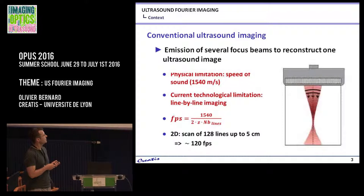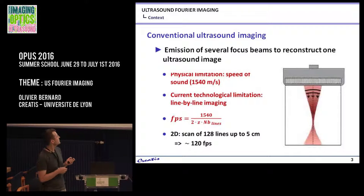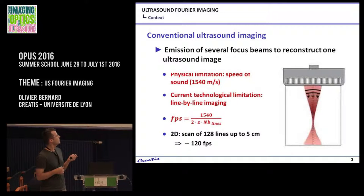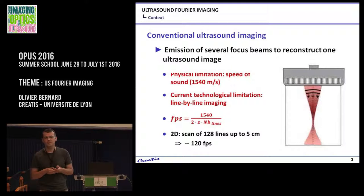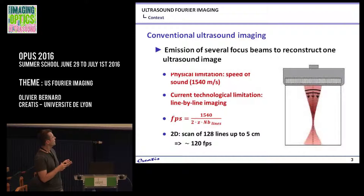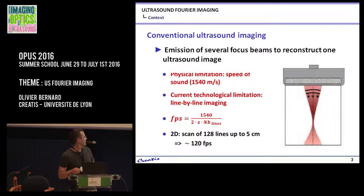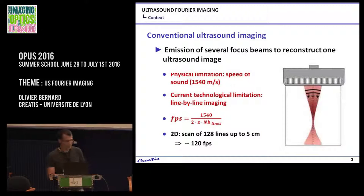Very simply, you have this equation. For example, if you consider that C, which is the speed of sound, is this value, then since you have to wait for your wave to come back before firing the other one, this is the equation. It depends on Z, which is the depth you want to image, and the number of lines that you're going to record. So typically, if you want to image something at 5 centimeters, you want to get up to 120 frames per second.